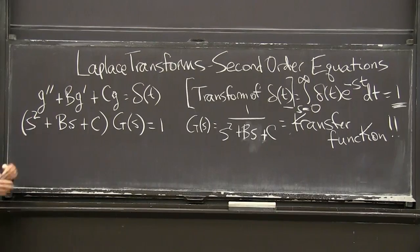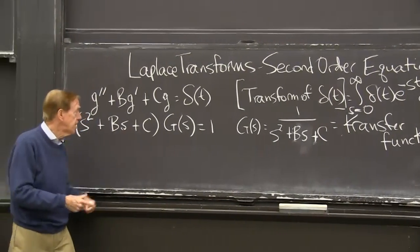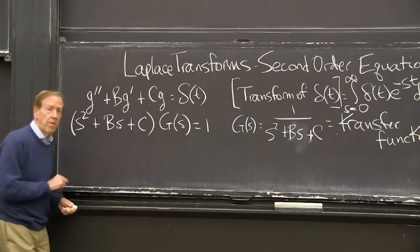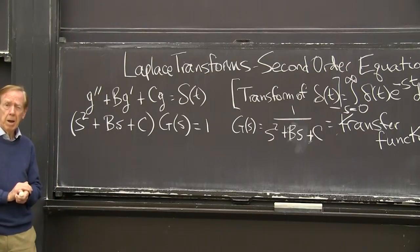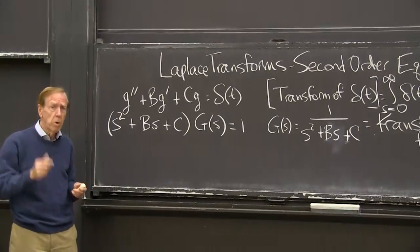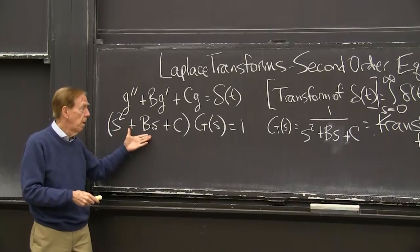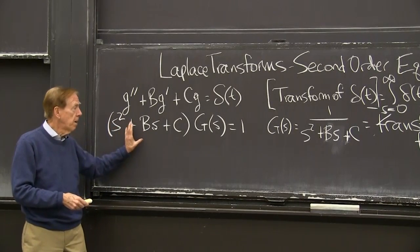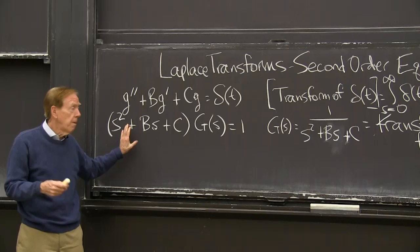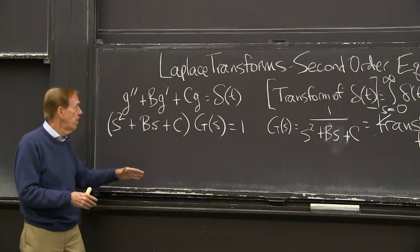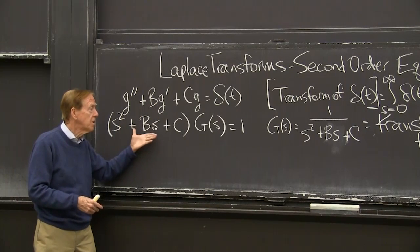We're not surprised to see the very familiar quadratic whose roots are the two exponents, s1 and s2, showing up here. We've seen this every time. Because we have constant coefficients, we always see this quantity.